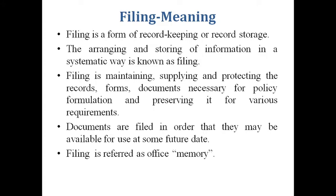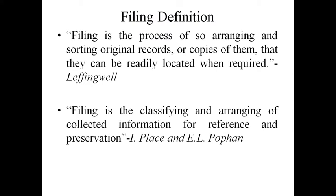Documents are filed so that they may be available for use at some future date, and therefore filing is referred to as office memory. The first definition of filing is: filing is a process of so arranging and sorting original records or copies of them that they can be readily located when required. This definition gives emphasis on arranging — that is, maintaining an order — then sorting, which means classification of various records.